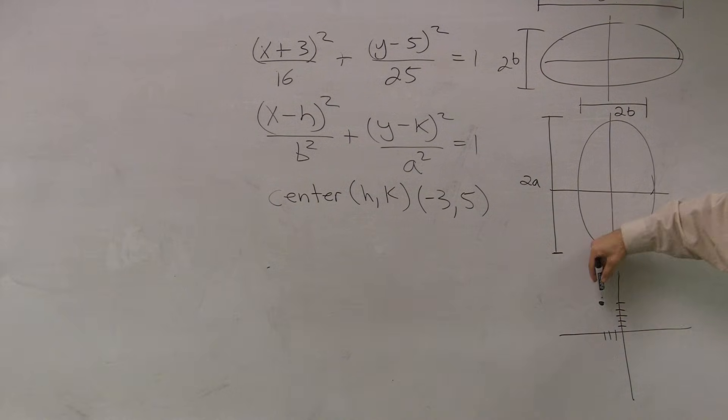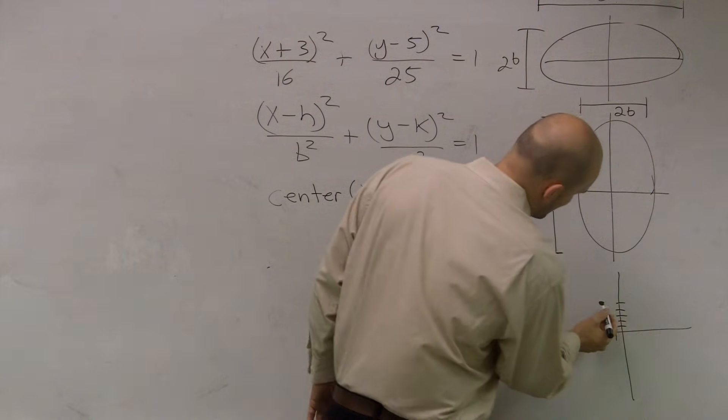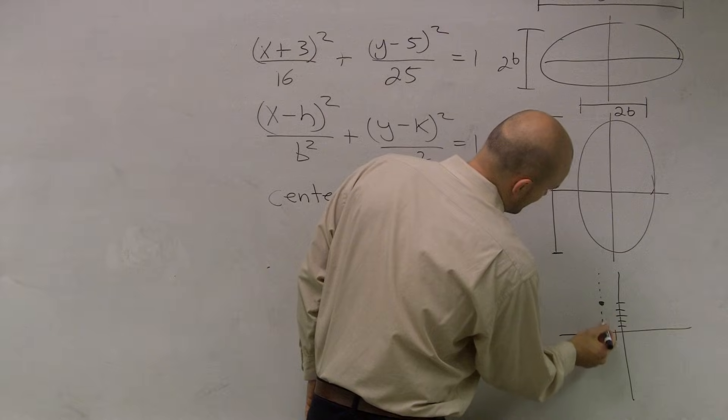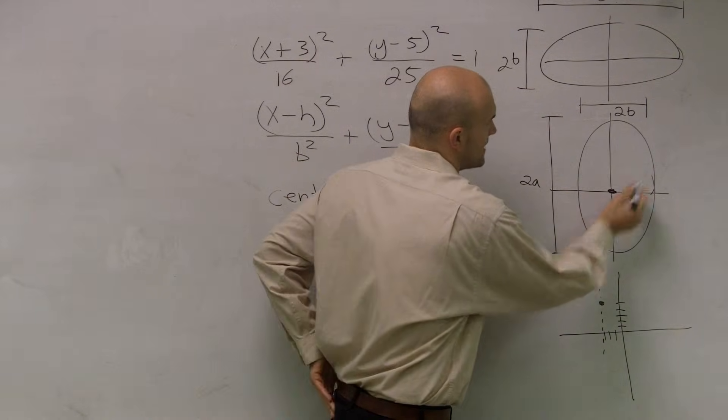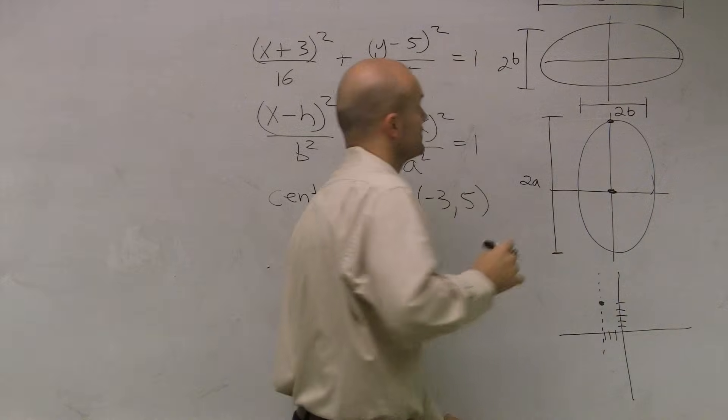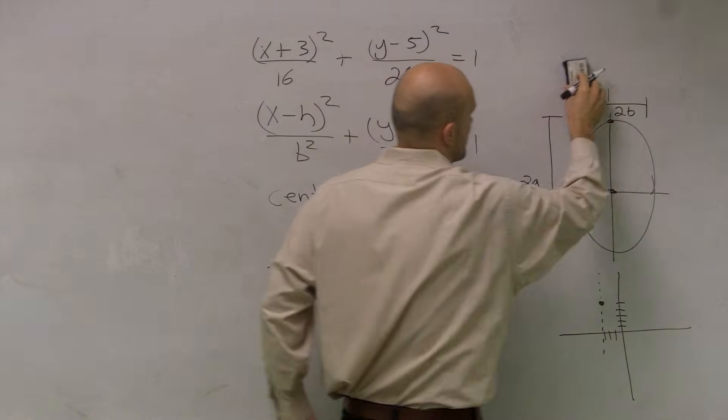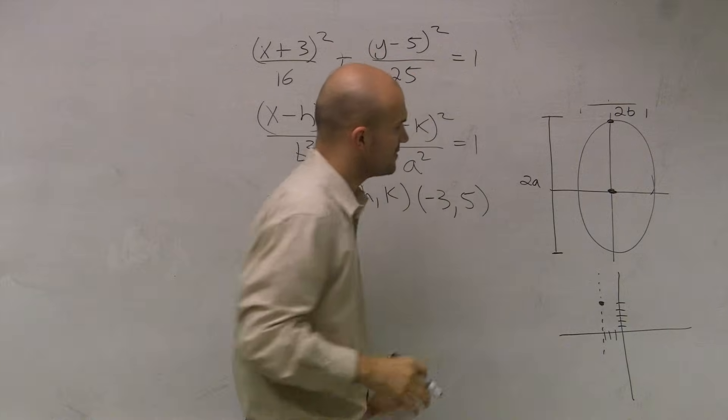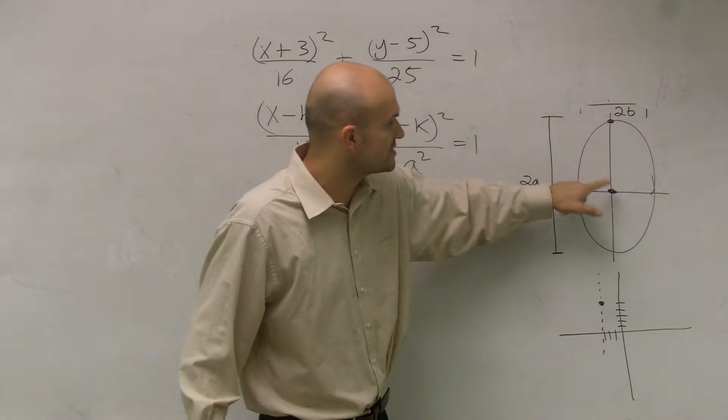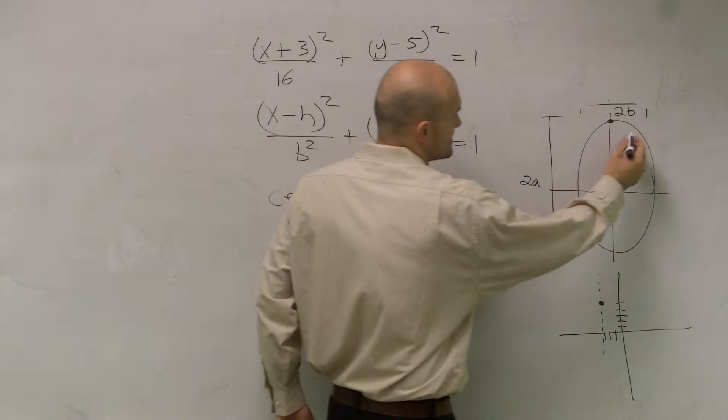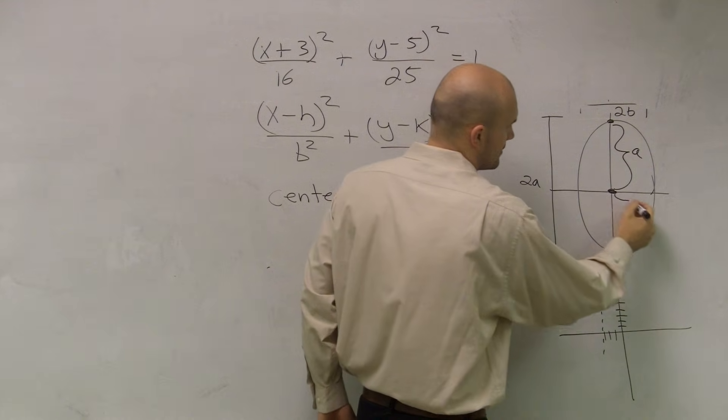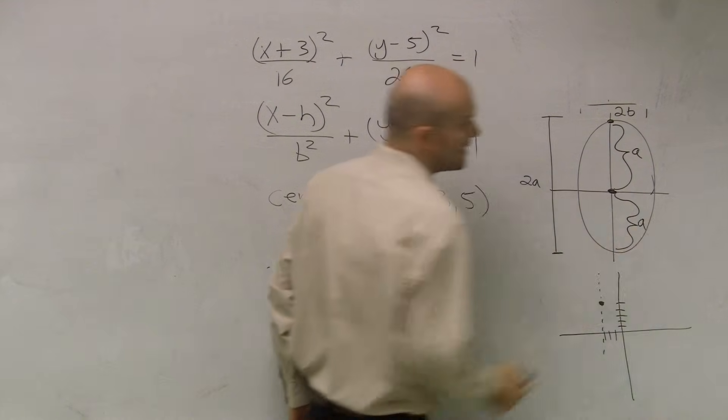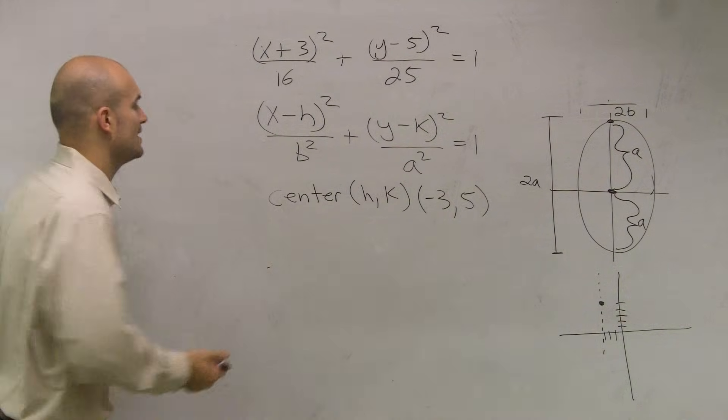And then what I need to do is if here is my center, I'm going to have a vertical axis of symmetry. So now what I need to do is determine if here's my center, my two vertices, right, we're not dealing with the horizontal, so let's just erase this. So now if here's my vertex, my two vertices are going to be a distance of a, a up and a down. So I need to determine now what is the value of a. Well, we have 25 equals a squared, so therefore, a equals 5.